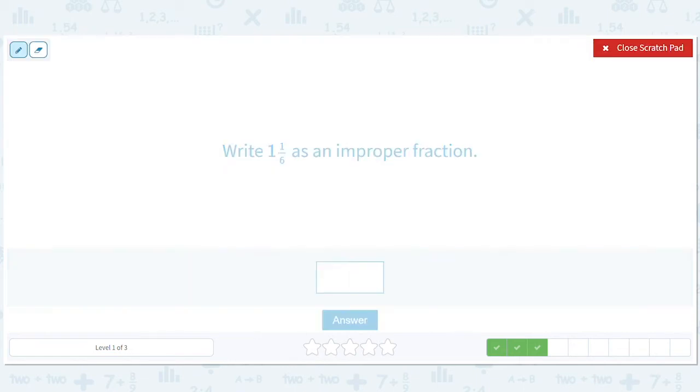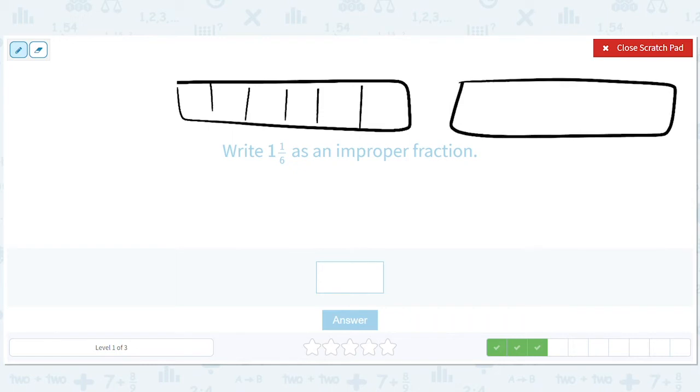Okay, so now I've got, I'm breaking things down into sixths. 1, 2, 3, 4, 5, 6, right? That's 6 pieces. And I basically have 1 and 1/6.